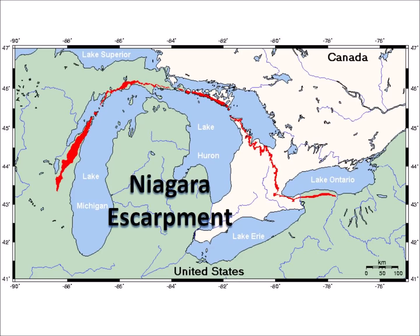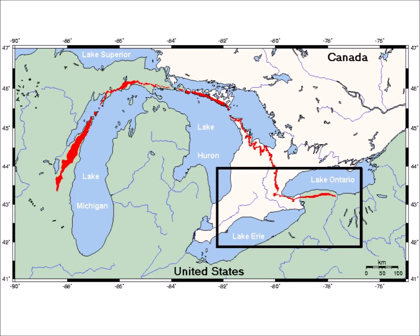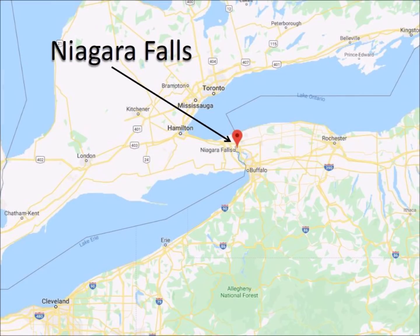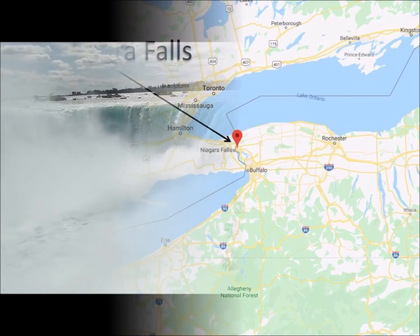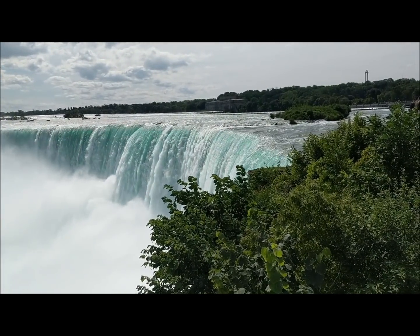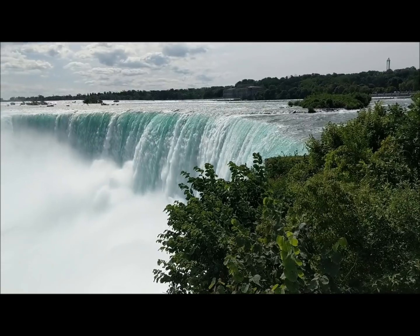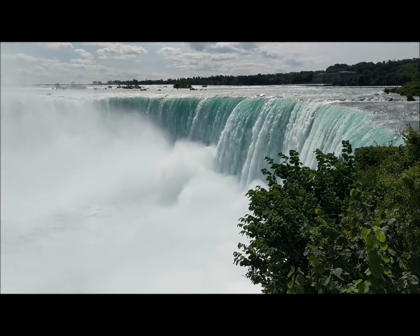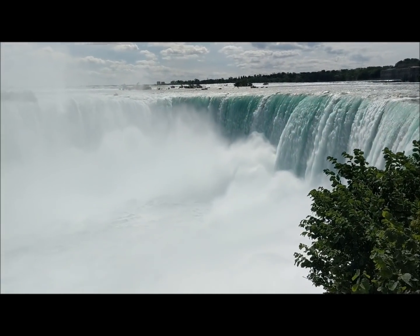The Niagara Escarpment is notable because it makes a semicircle around the Michigan Peninsula. The escarpment extends eastward, south of Lake Ontario. The most famous view of the escarpment is at Niagara Falls, which is marked by a drop in elevation between Lake Erie and Lake Ontario of 99 meters or 325 feet.